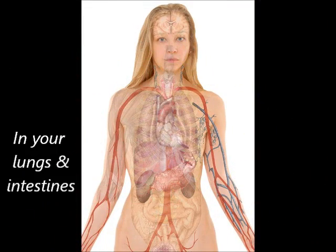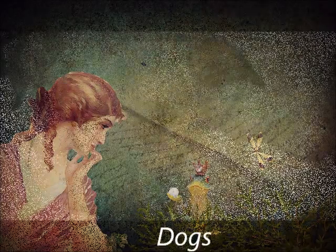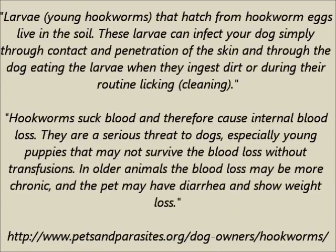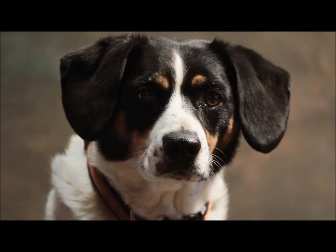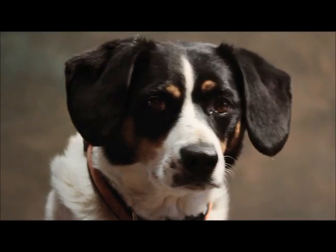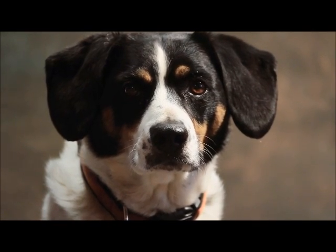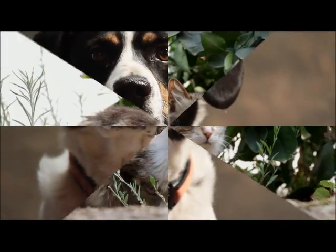Where do hookworms like to live? Hookworms prefer to live in the lungs and intestines of humans or animals. Hookworms can affect dogs — they can enter simply when a dog walks over contaminated ground, since they easily penetrate the skin. A dog can also ingest hookworm larvae by eating dirt. Because hookworms live on blood, they can cause internal blood loss, which can lead to death. Puppies may need blood transfusions to replace the blood lost. Hookworms also cause diarrhea and weight loss, depriving dogs of nutrients, water, and everything they need to survive. Hookworms can also affect cats, cows, and rodents.